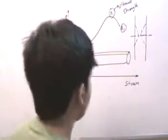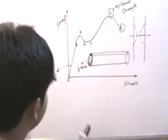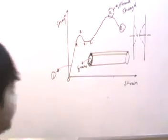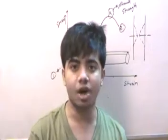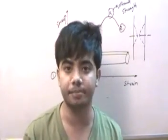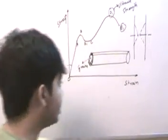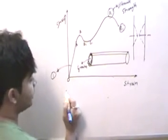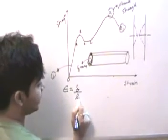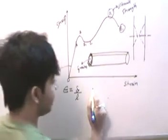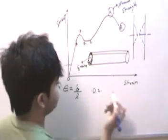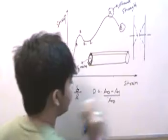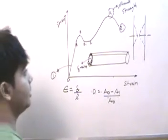D1 is the point of ultimate strength. From this curve, three points are important: number one, the proportional limit; number two, the yield point; and number three, ductility. Ductility is measured by the elongation in length — that is, ΔL/L — or by the reduction in cross-sectional area, defined as (A₀ − A₁)/A₀, where A₀ is the original cross-sectional area and A₁ is the reduced cross-sectional area. These two are the basic measures of ductility.